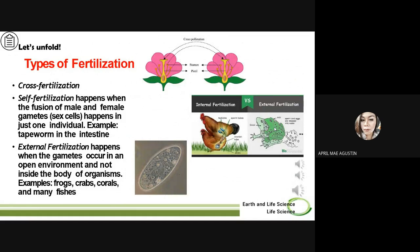Let us now discuss the different types of fertilization. The first one is cross-fertilization. Allogamy, or cross-fertilization, is the fertilization of an ovum from one individual with the spermatozoa of another. By contrast, self-fertilization happens when the fusion of male and female gametes, or sex cells, happens in just one individual. Another term for self-fertilization is autogamy. In humans, the fertilization event is an instance of allogamy. An example of an organism that exhibits self-fertilization is the tapeworm in the intestine.